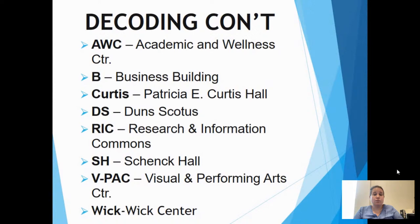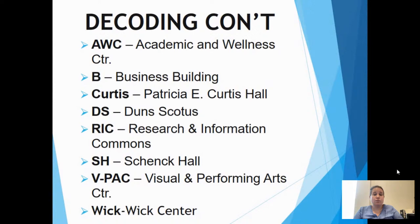The next thing is the different buildings where you might have class. Most of our classes for the fall are planned to be in person. Our AWC is the Academic and Wellness Center. B is the Business Building. Curtis is Patricia E. Curtis Hall. DS is Dunscotus. RIC, or the RIC, is our Research Information Commons Building. SH is Shankal. VPAC is our Visual and Performing Arts Center. And WIC is our WIC Center.